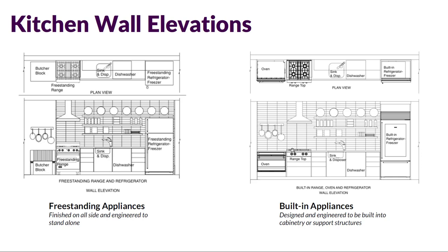Looking at the range top and oven: a range top is just the top cooking portion that needs to be built into the cabinetry and rest inside the countertop surface. Wall ovens come in many sizes and configurations and are meant to be built into cabinetry at various heights — they cannot simply sit on the floor. They are meant to be built into cabinetry or possibly a wall-type scenario.